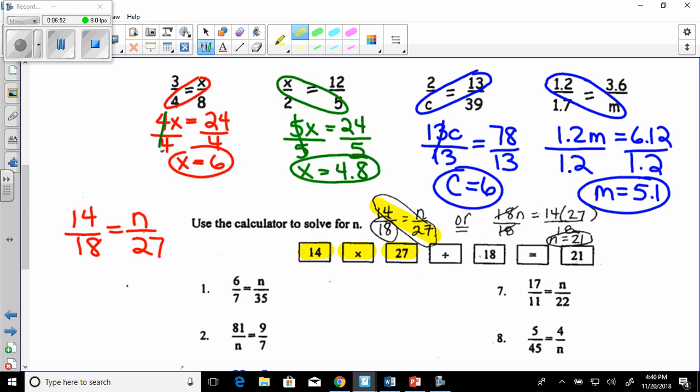And then you are going to divide. This is a division symbol here. And then you're going to divide by 18, press the equal sign, and you're going to get 21. And here's your 21 right here. Or the way that I showed you was 18n equals 14 times 27. And then you would divide both sides by 18.